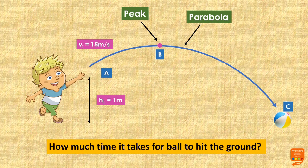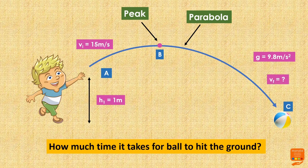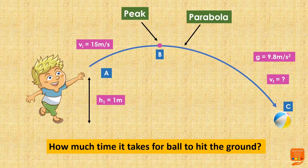We also know that the acceleration due to gravity is 9.8 meters per second squared. We do not know the final velocity of the ball just before it touches the ground. To find the time taken for the ball to hit the ground, we would first have to derive the quadratic equation for the projectile motion.